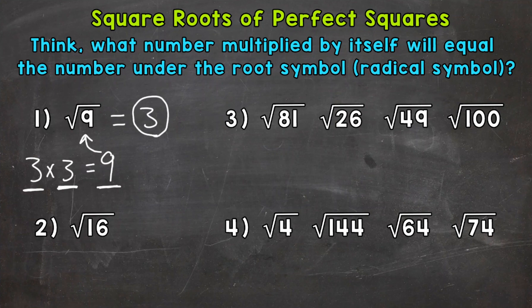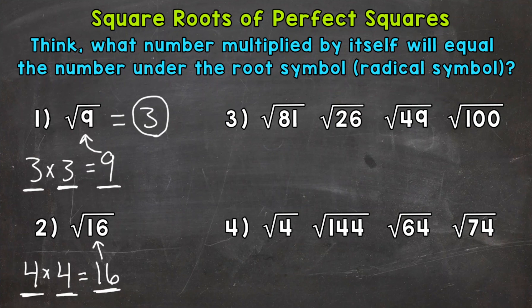Let's move on to number 2, where we have the square root of 16. What number multiplied by itself equals 16? We know 4 times 4 equals 16 — a number multiplied by itself gives us the number under the square root symbol. So the square root of 16 equals 4, and that's our final answer.